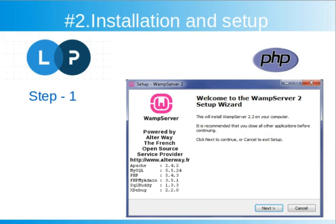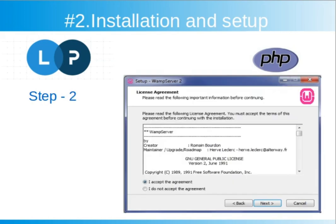This is a security warning window. When you double-click on the installation file, you will get a security warning window to confirm that you are going to install WAMP server. Click next to proceed.